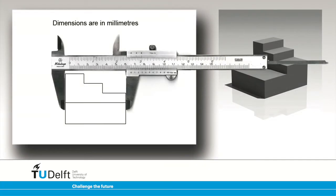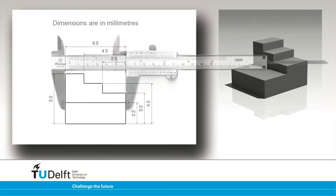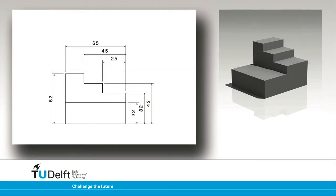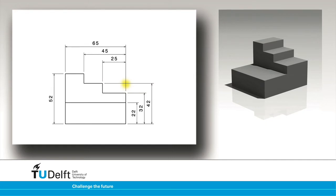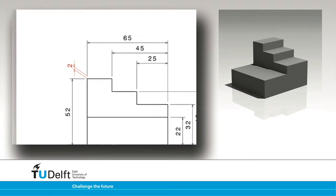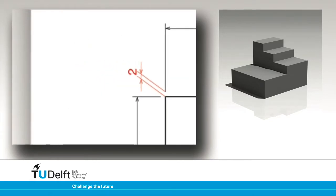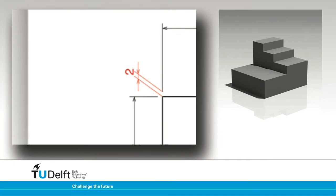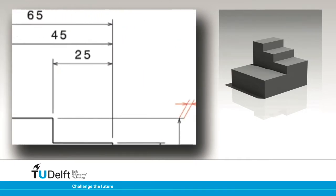Dimensions are always given in millimetres. They should be placed outside of the geometry. Crossing of lines should be kept to a minimum. Crossing of projection lines is preferred over crossing of projection lines and geometry lines. Use a small gap of about 2mm between the outline and the start of a projection line. Projection lines should continue slightly beyond the dimension line, also of about 2mm.